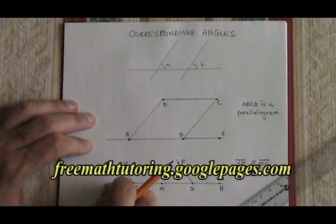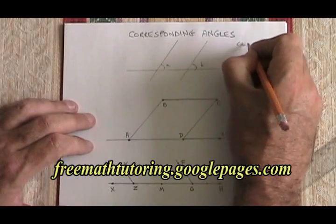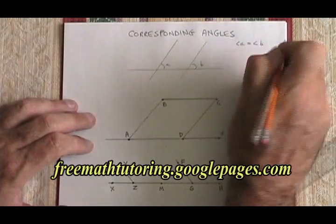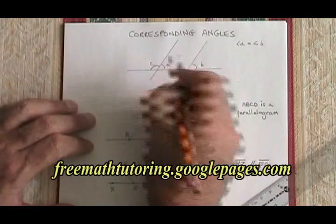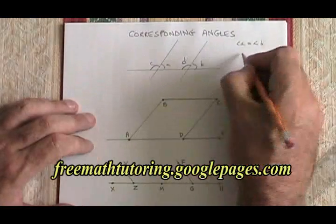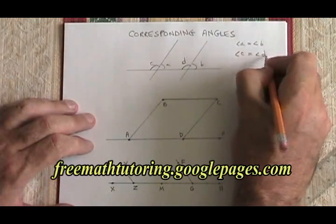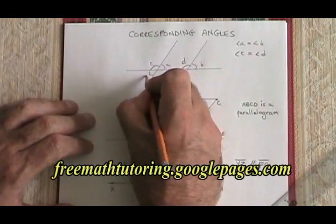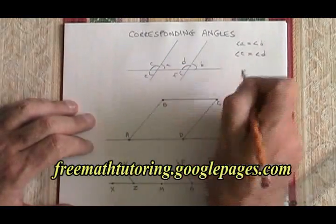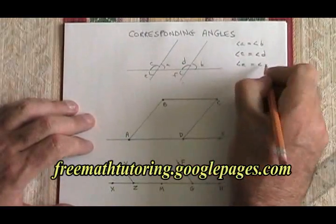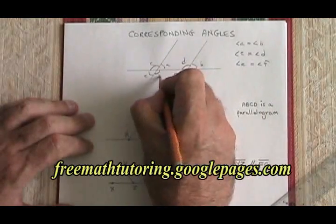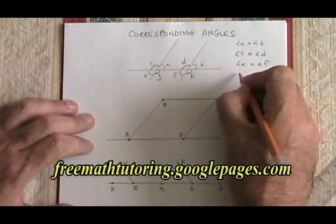Actually, when I drew those two lines, I created four sets of corresponding angles. I will list them. Angle A equals angle B. Angle C equals angle D. Angle E must be equal to angle F. And finally, angle G must be equal to angle H.